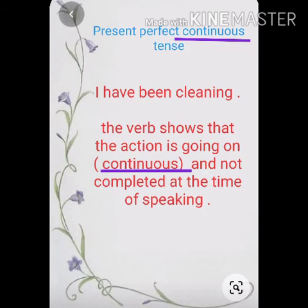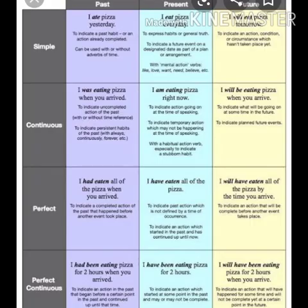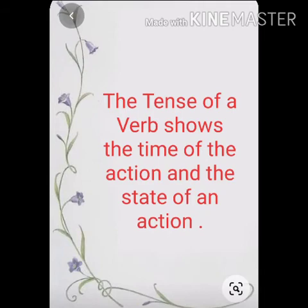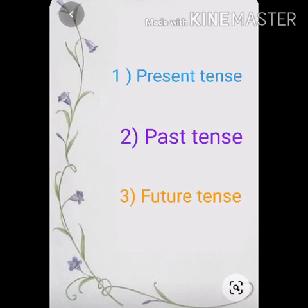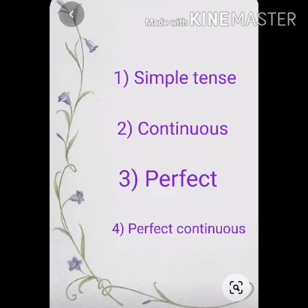So, there are three main tenses: present, past, and future. For the state of the action, we further divide it into four aspects: simple tenses, perfect tenses, continuous tenses, and perfect continuous tenses. Guys, this is just the introduction to the tenses.